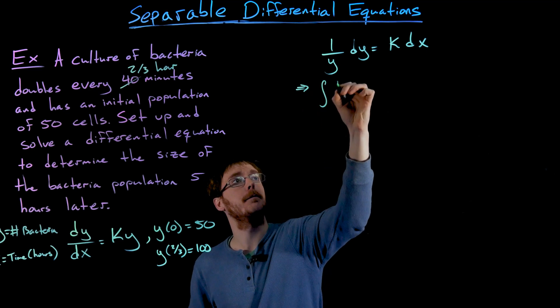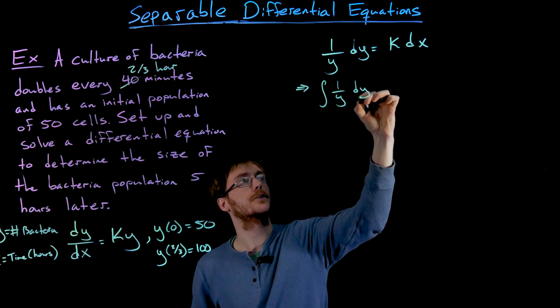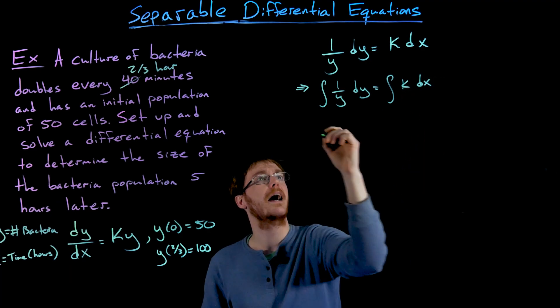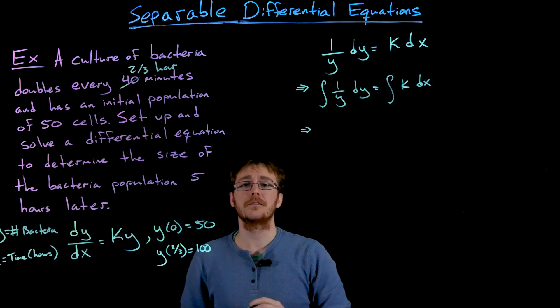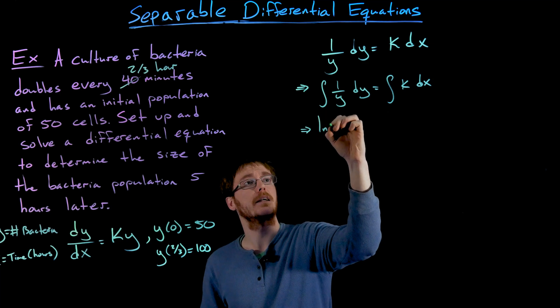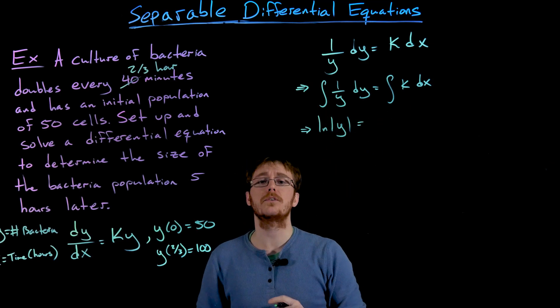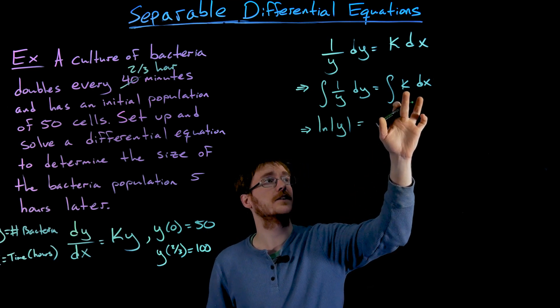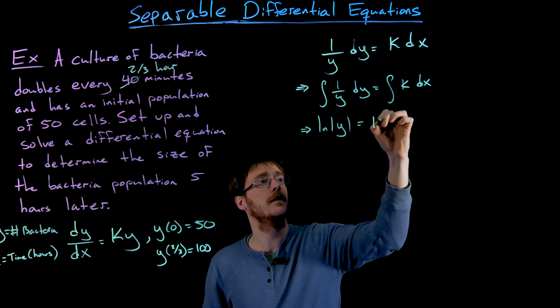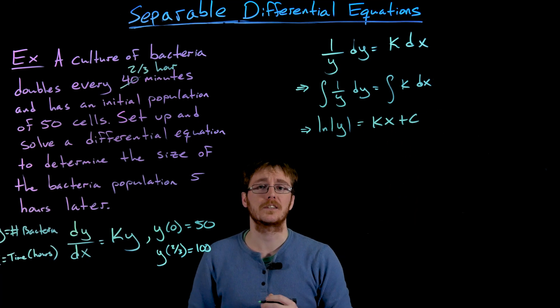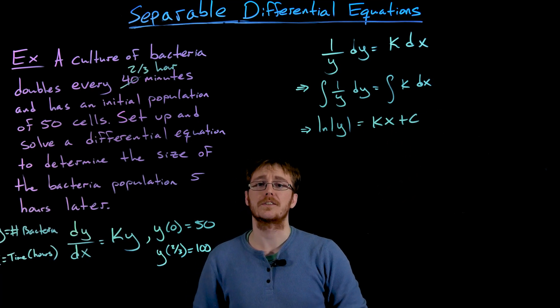So now we can integrate both sides, the left-hand side with respect to y and the right-hand side with respect to x. And for the antiderivative of that left-hand side, we get the natural log of the absolute value of y. That's going to be equal to the antiderivative of the constant k with respect to x. And that'll be that constant k times x plus some other constant of integration that we're going to call c.